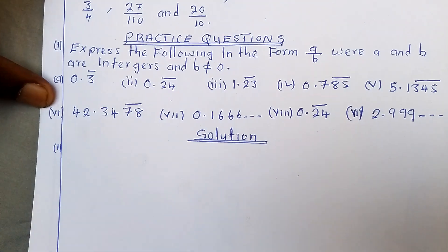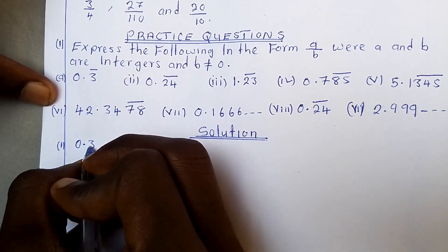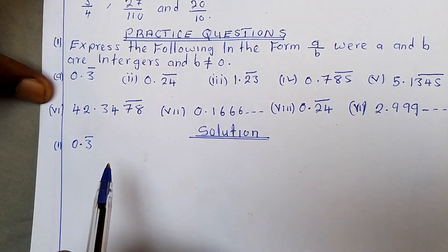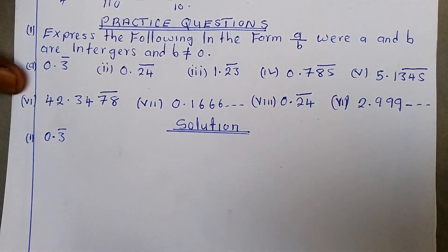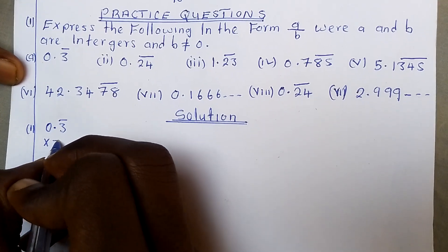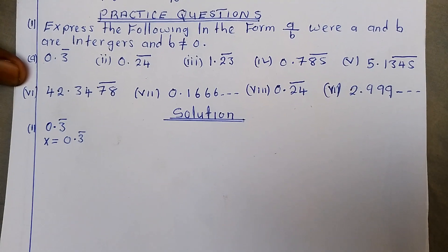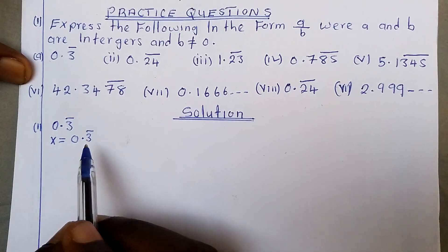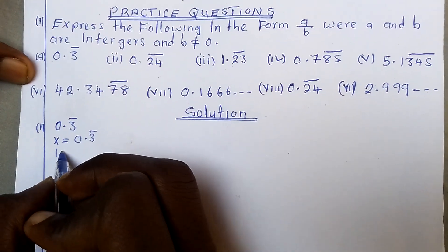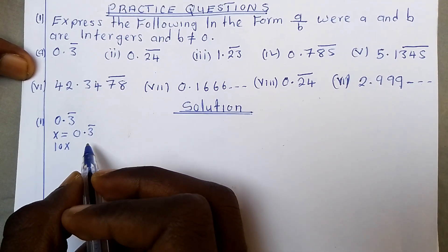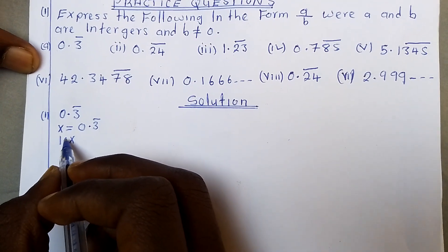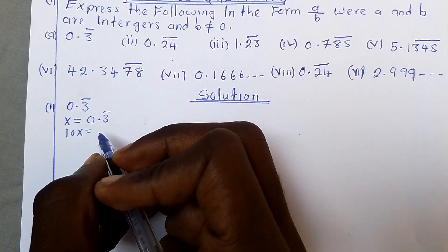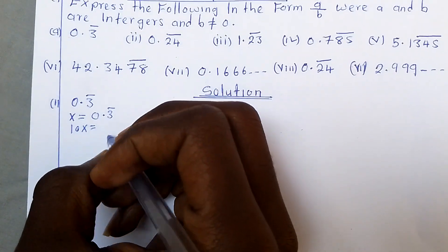The first question is simply 0.3 with a bar. This means that the 3 is continuing — it will be 3, 3, 3, 3 repeating. They want us to express it in ratio form. The first thing to do is equate X equal to 0.3 bar. Now you need to ask yourself: what number can you multiply so that 3 becomes a whole number? It is simply 10, because if you say 10 multiplied by 0.3, it is going to be 3.